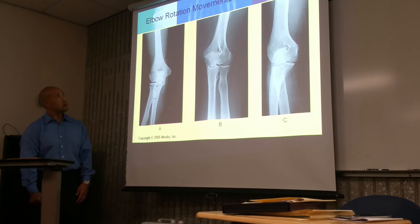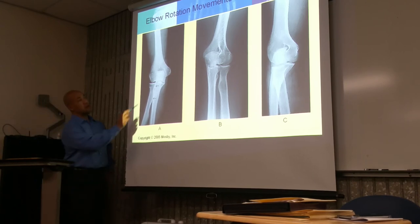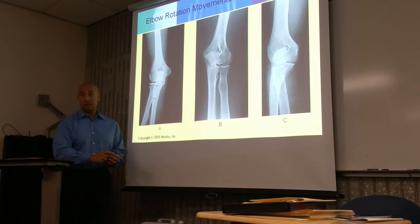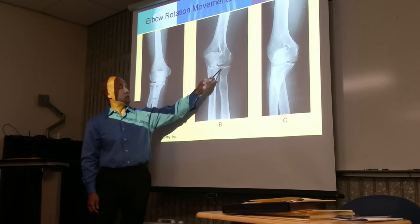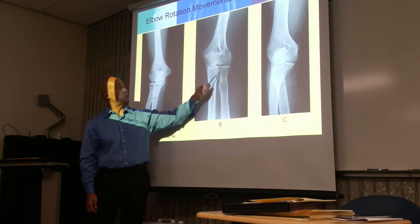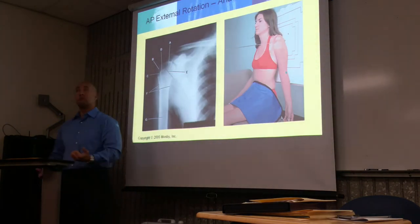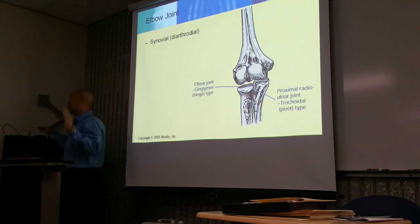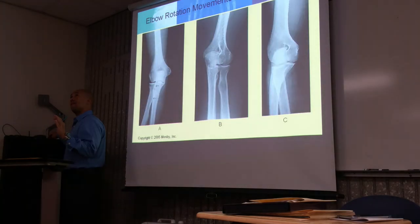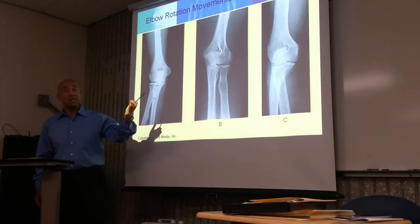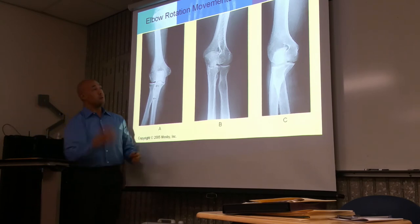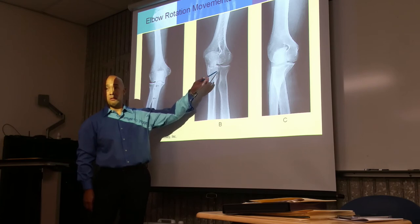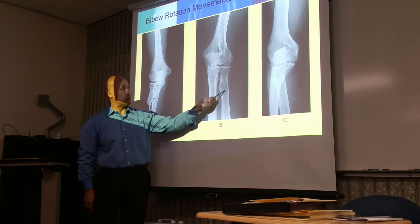For A — the AP — the radial head and tuberosity are slightly superimposed with the ulna. In an external oblique — pinky up, thumb down — the radial head and radial tuberosity are free from superimposition, and you're seeing the proximal radial ulnar joint clearly. The tuberosity is also free from superimposition.